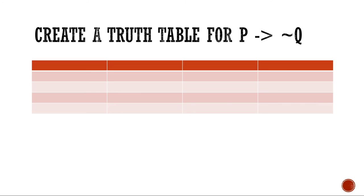I'm going to begin with this example. We're asked to construct a truth table for the statement P implies not Q — in other words, if P, then the negation of Q. I'm going to begin my truth table by making a column for P and a column for Q, because those are the two letters used in the problem.